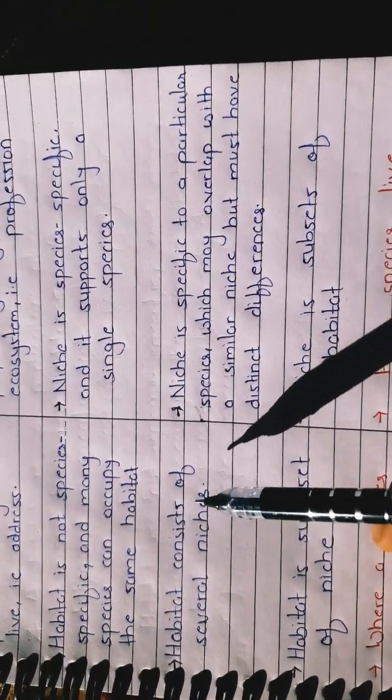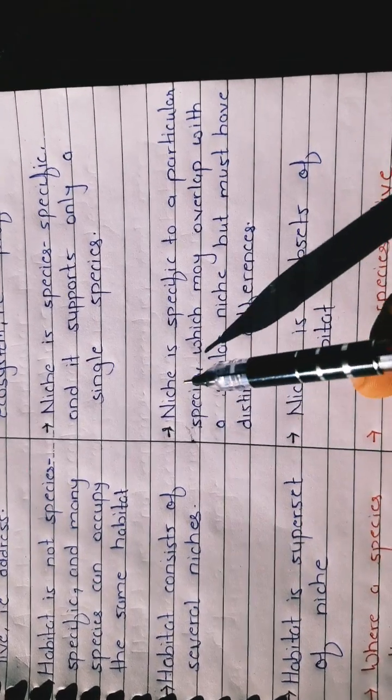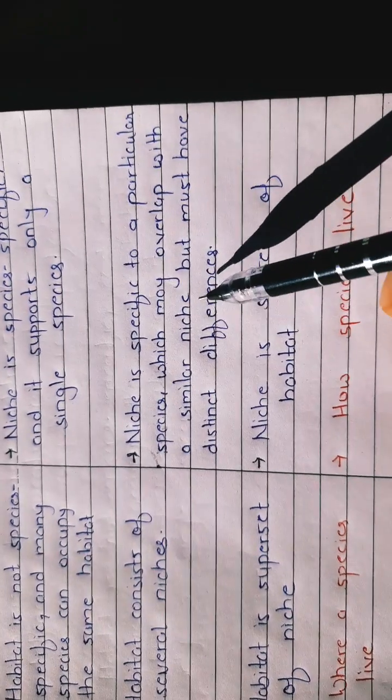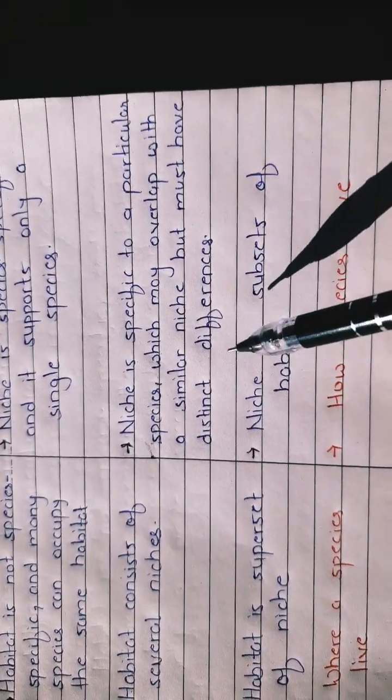Habitat consists of several niches. Niche is specific to a particular species which may overlap with a similar niche but must have distinct differences.